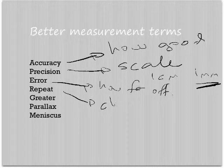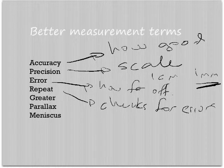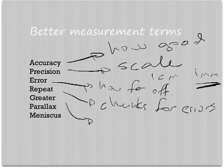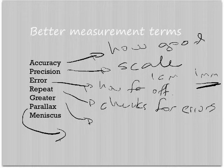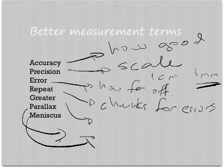Repeat - this checks for errors. Greater - what I mean by that is you know how you make those longer swings, you use 10 washers in a measuring cylinder to find the volume of one. Things like that. Parallax we talked about and meniscus we talked about.